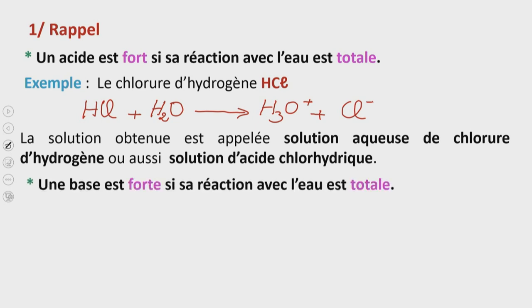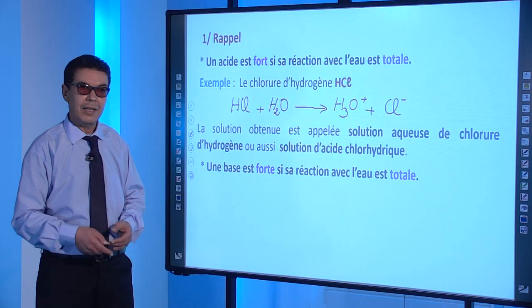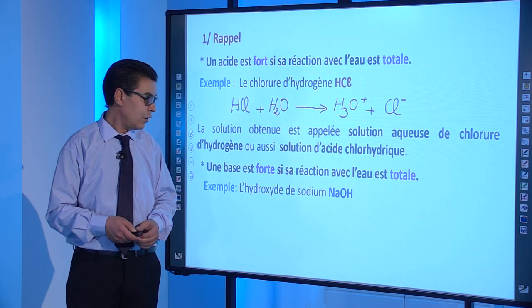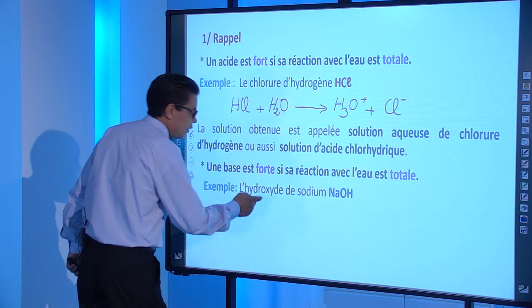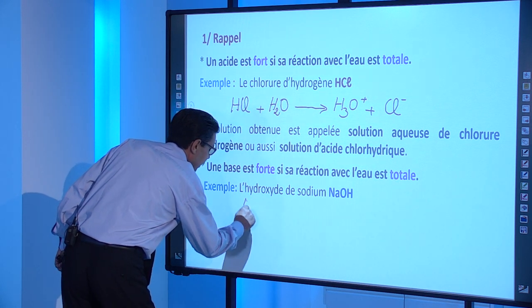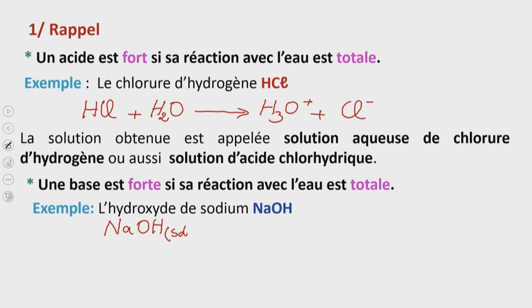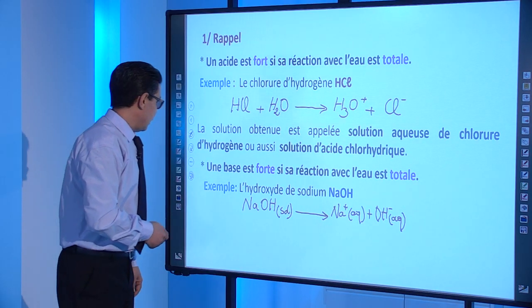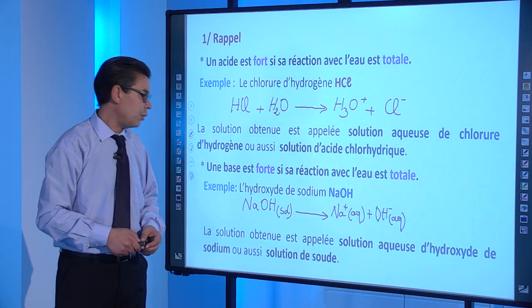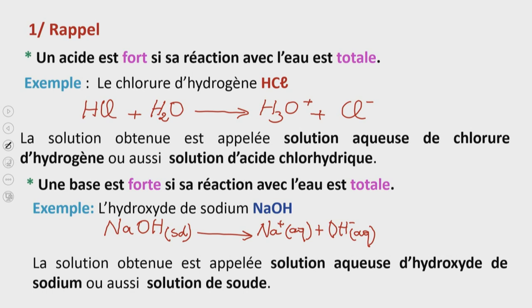Une base est forte si sa réaction avec l'eau est totale. Exemple : l'hydroxyde de sodium NaOH. Son équation de réaction d'ionisation s'écrit : NaOH (solide) → Na⁺ (aq) + OH⁻ (aq). Les ions aqueux sont entourés par des molécules d'eau. La solution obtenue est appelée solution aqueuse d'hydroxyde de sodium, ou aussi une solution de soude.